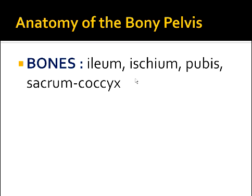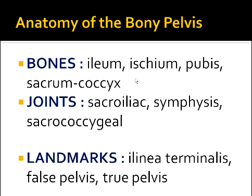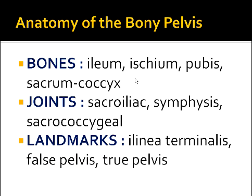Today we will discuss the anatomy of the bony pelvis, especially the female bony pelvis. The bony pelvis consists of bones, joints, and landmarks. The bones are ilium, ischium, pubis, sacrum, and coccyx. The joints are the sacroiliac joint, symphysis pubis, and sacrococcygeal joint. The landmarks include the linea terminalis, false pelvis, and true pelvis.